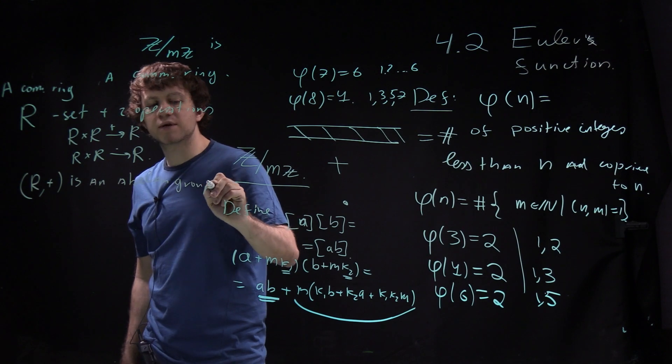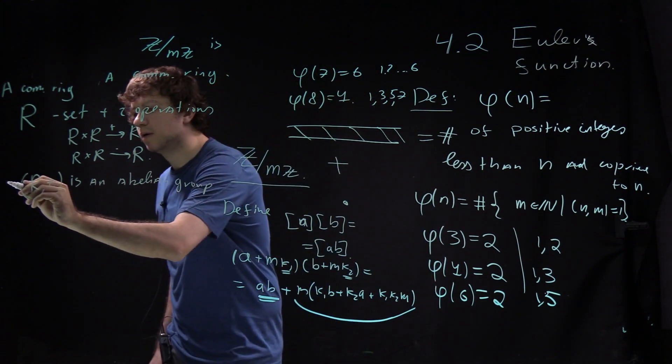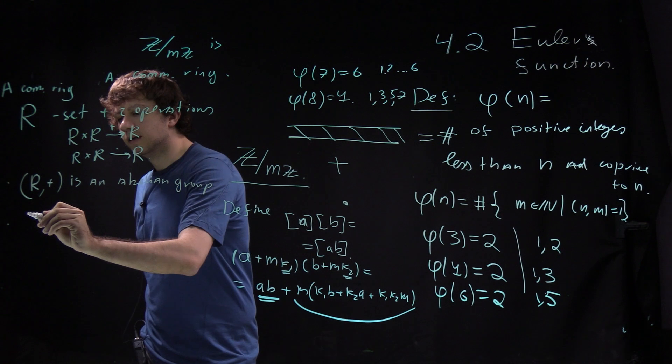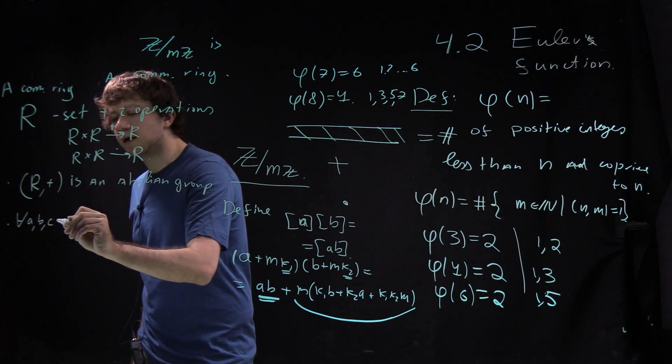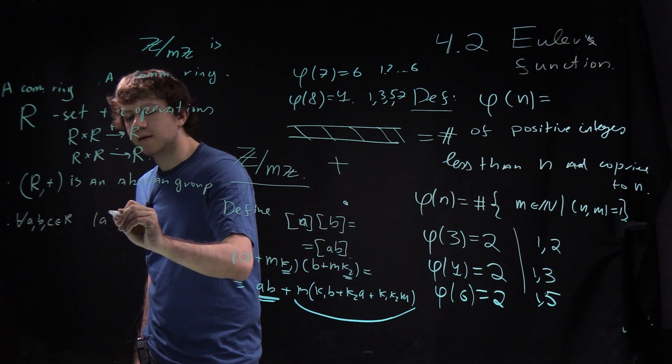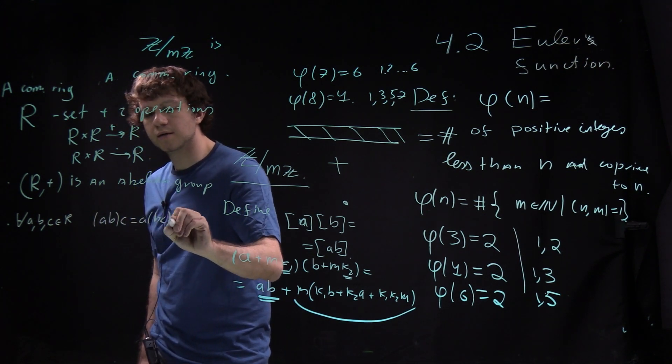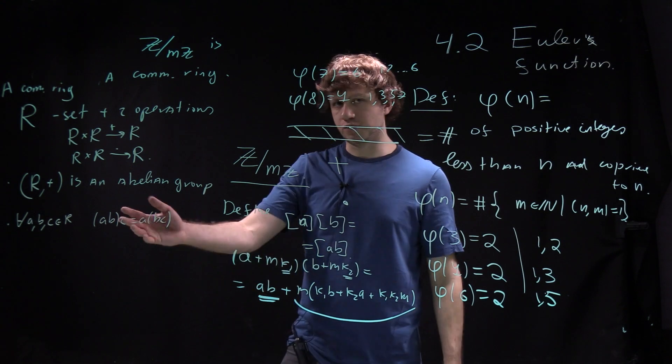R with addition is an abelian group. Then there are other axioms related to multiplication. For every three elements ABC in R, AB times C equals A times BC. That's associativity.